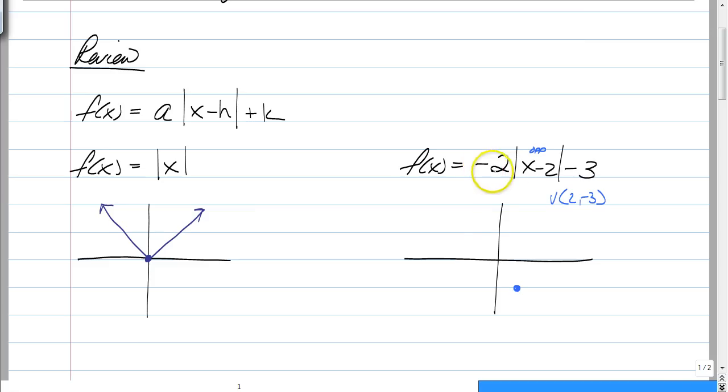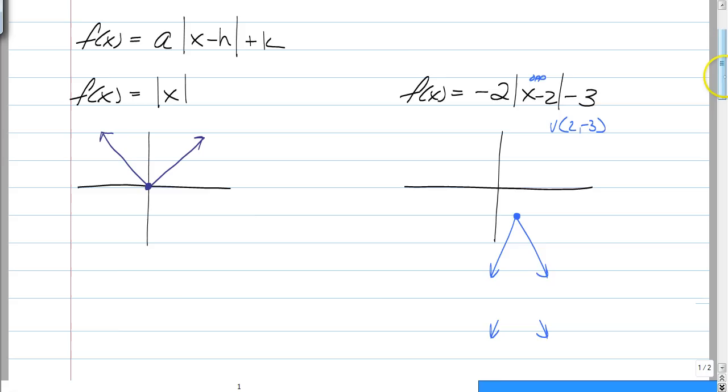The negative flipped it, so instead of it opening up, it opened down. And the 2 made it stretch a lot faster. So that's old absolute value graphs.